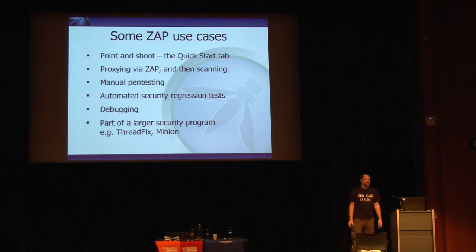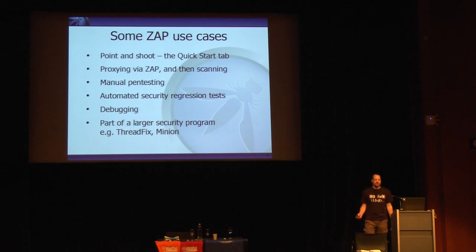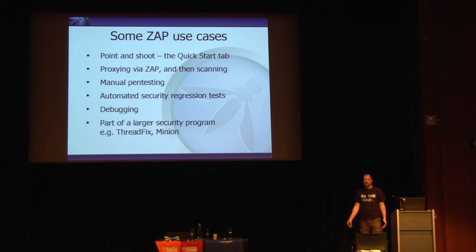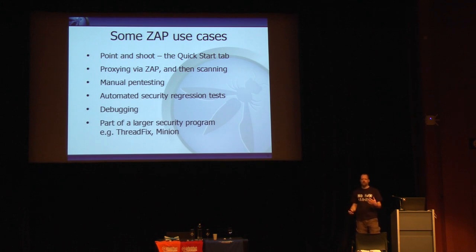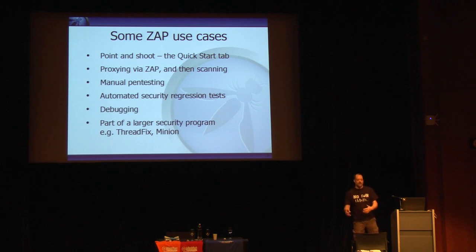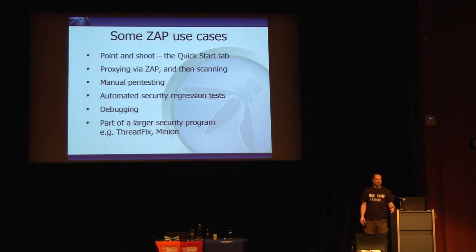The last thing on the introduction is some use cases. You can use ZAP as a point-and-shoot tool — enter a URL, it'll spider the site and do active and passive scanning. This works well unless you have authentication, in which case you'll be hitting the login page. What we tend to recommend is proxying via ZAP: explore the web application manually with your browser proxying through ZAP, put in sensible values, and teach ZAP about your application. The better you explore, the better ZAP can scan.